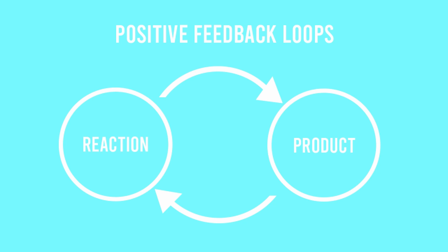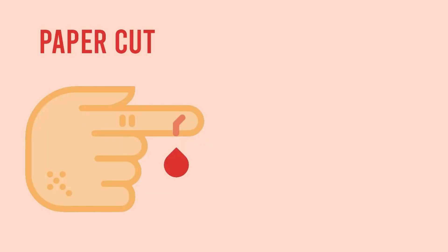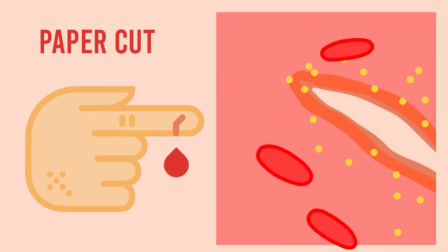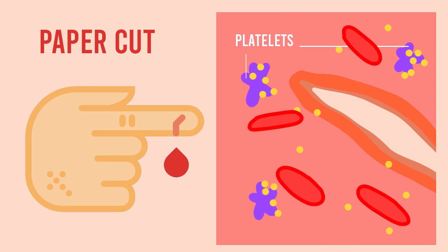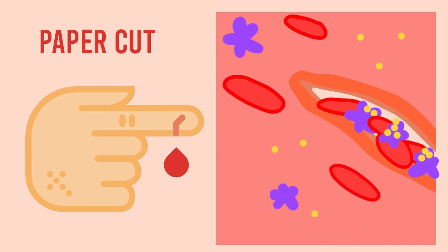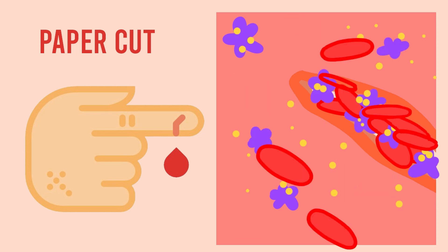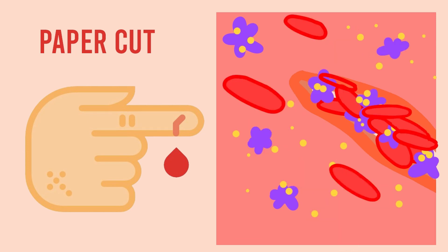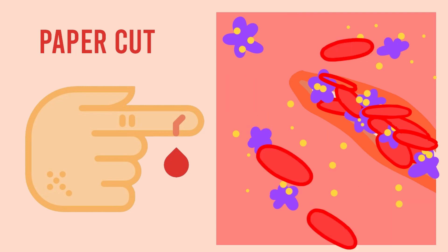On the other hand, positive feedback occurs when the product of a reaction leads to an increase of that reaction. An example of this that we can observe within our own body is blood clotting. Let's say that you scratch your finger on a paper, resulting in a paper cut. This cut causes the release of a chemical which activates your blood platelets. These platelets will rush to the site of the cut and continue to release a chemical which signals more platelets to activate. This process continues until the blood clot is large enough to prevent the bleeding from occurring.